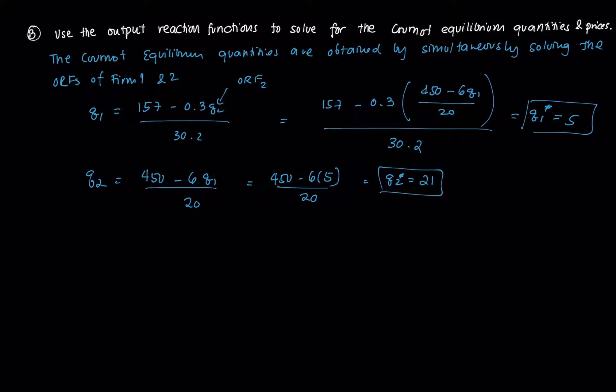How do you get the prices? To get the prices, you just plug it back to the inverse demand function. For firm 1, that's 197 minus 15.1 times Q1, which is 5, minus 0.3 times Q2, which is 21. This means P1 equals 115.20. Solve that on your own time.